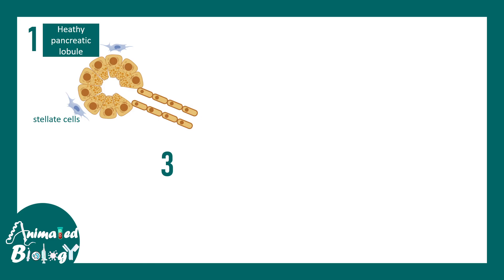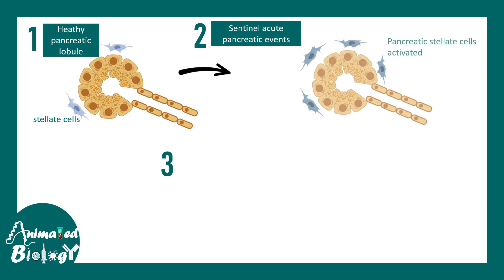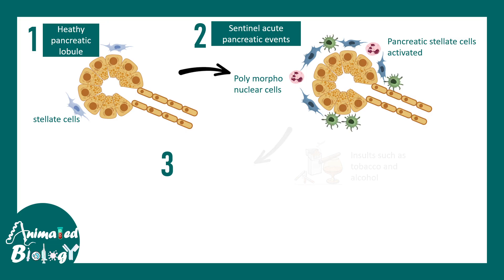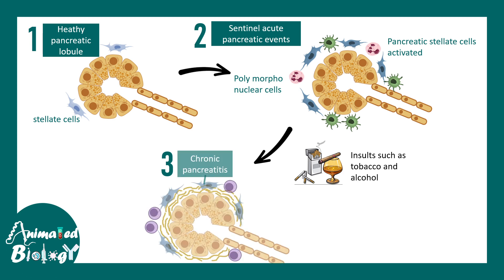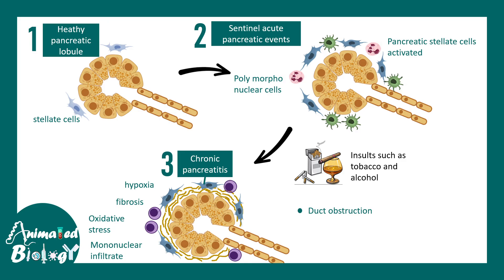In chronic pancreatitis, repetitive bouts of acute pancreatitis lead to accumulation of stellate cells around the acinar cells, infiltration of polymorphonuclear cells such as neutrophils, and macrophage invasion. Repetitive injury leads to fibrosis, which is a hallmark of chronic pancreatitis. Hypoxia, mononuclear cell invasion, and oxidative stress are the underlying molecular pathology. Pancreatic duct hypertension and duct obstruction lead to pain and other complications.